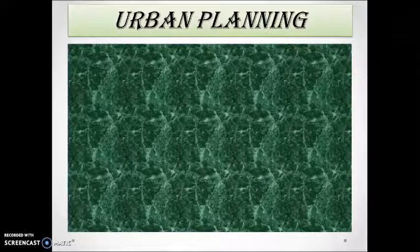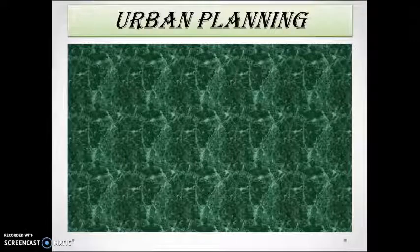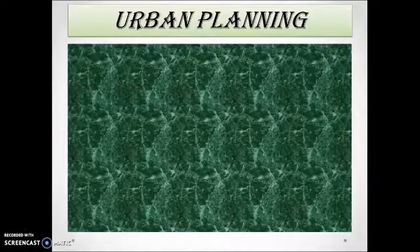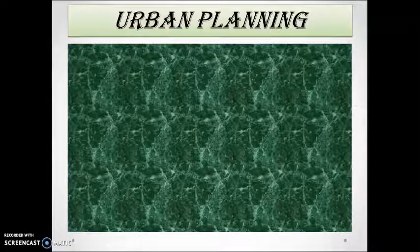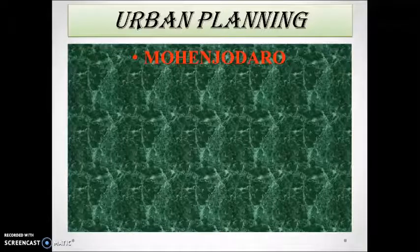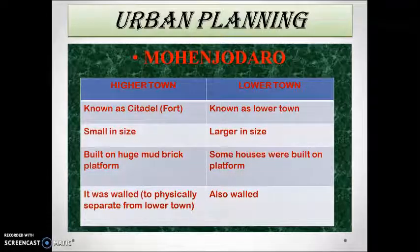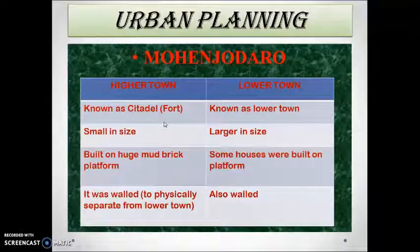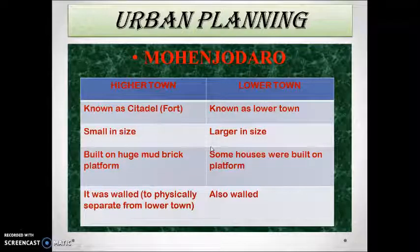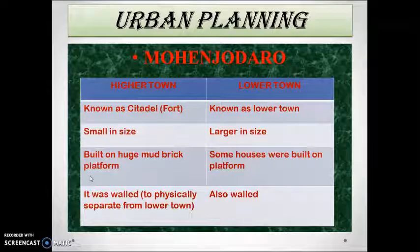Next is urban planning. Perhaps the most unique feature of the Harappan civilization was the development of urban centers. Let us look at Mohenjo-daro more closely. The structure was divided into two parts: the higher town and the lower town. The higher town was known as the citadel or fort, and was small in size, whereas the lower town was larger in size.